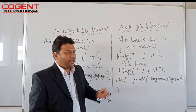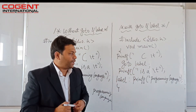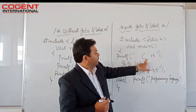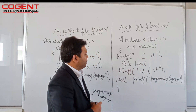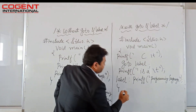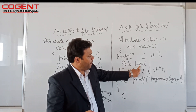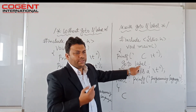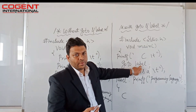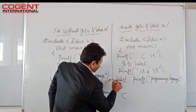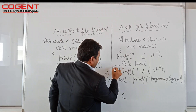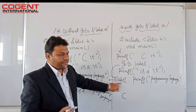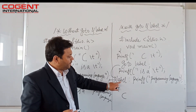Now we'll see how the goto and label statements work. I have used the printf statement that prints 'C'. The next statement is goto label — so the control of execution has to go to that label. Here it is — the control is transferred from this statement to the label.